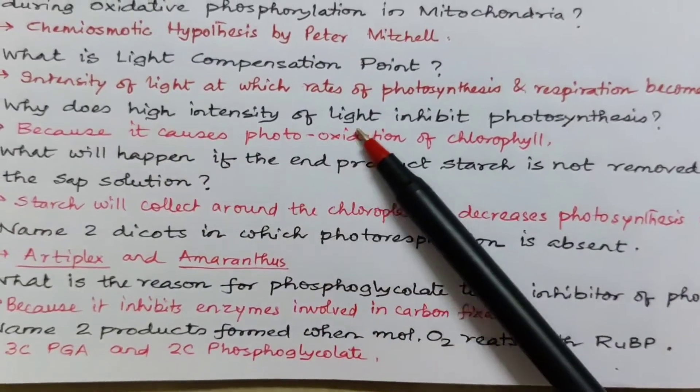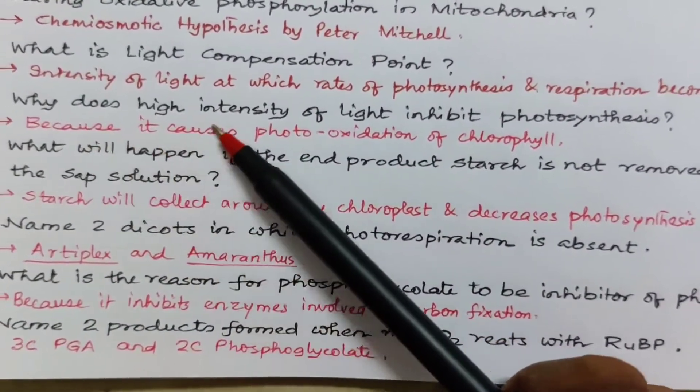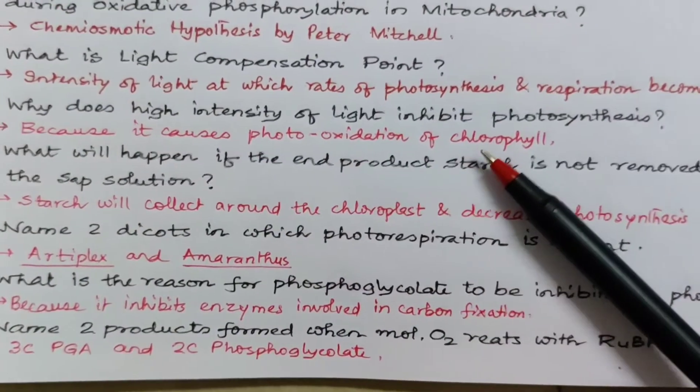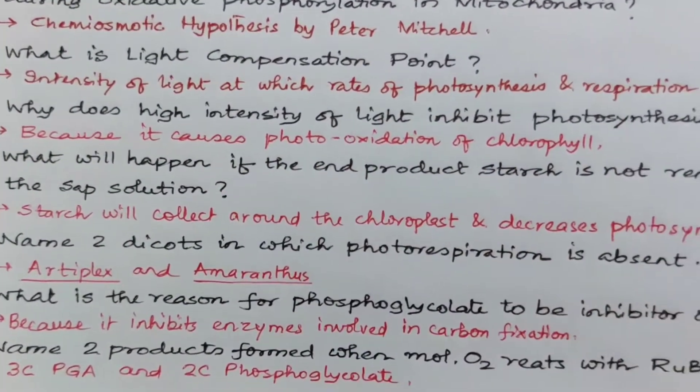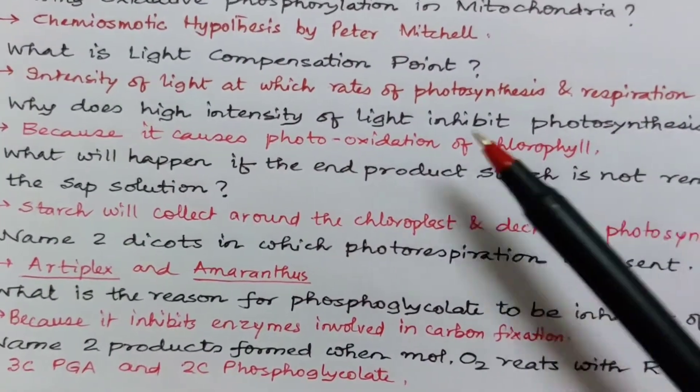Why does high intensity of light inhibit photosynthesis? Because it causes photo oxidation of chlorophyll. So chlorophyll gets photo oxidized and so it cannot perform photosynthesis.